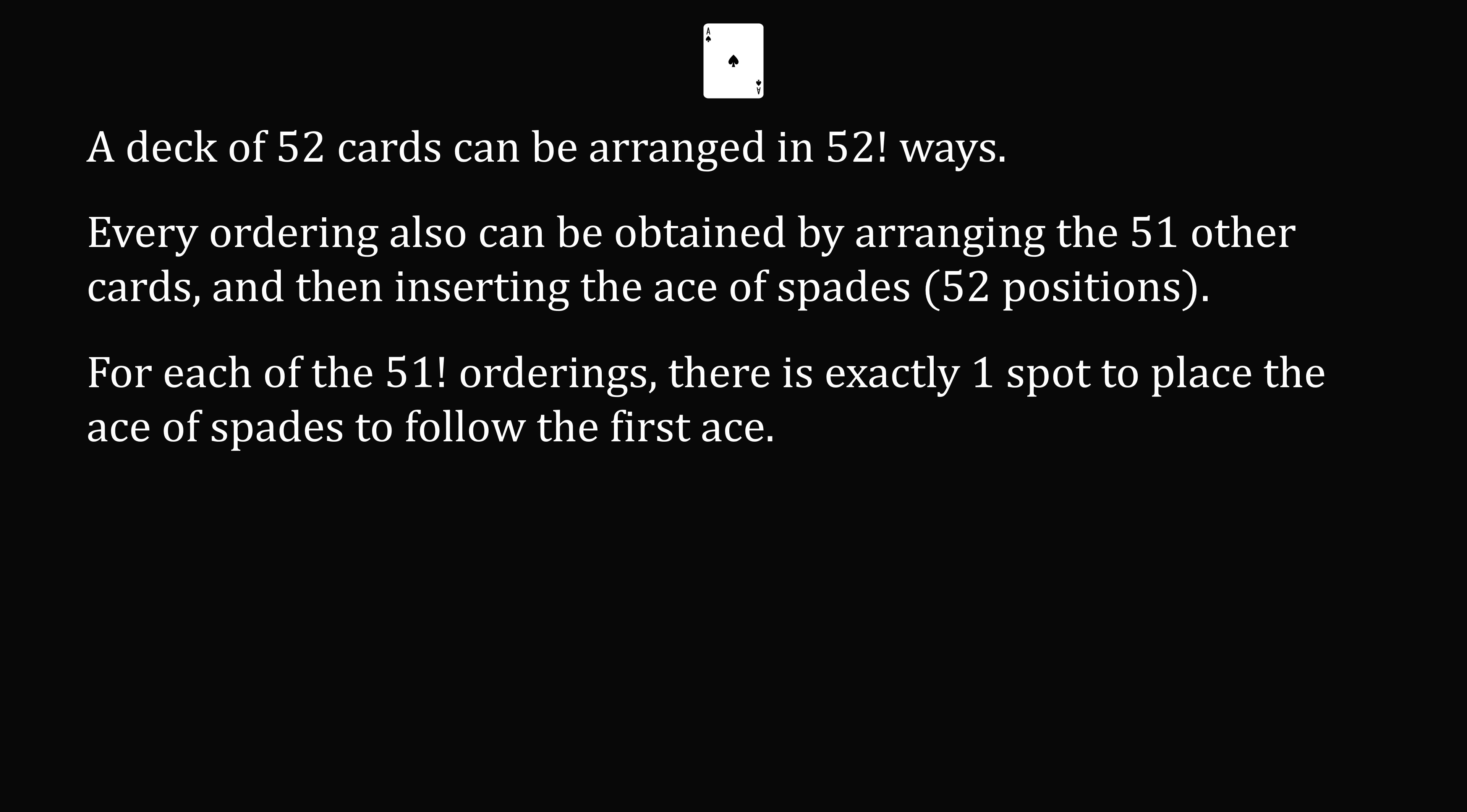For each of the 51 factorial orderings, there is exactly one spot to place the ace of spades to follow the first ace. So the probability of the ace of spades after the first ace is equal to the number of ways to arrange the ace of spades after the first ace, divided by the number of ways to arrange all 52 cards. This is equal to 51 factorial divided by 52 factorial, which equals 1 over 52.